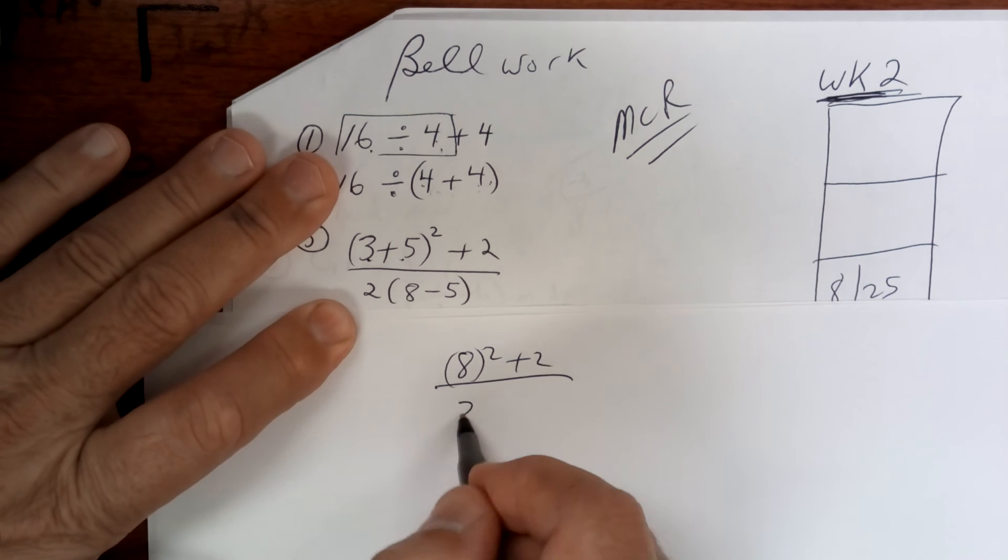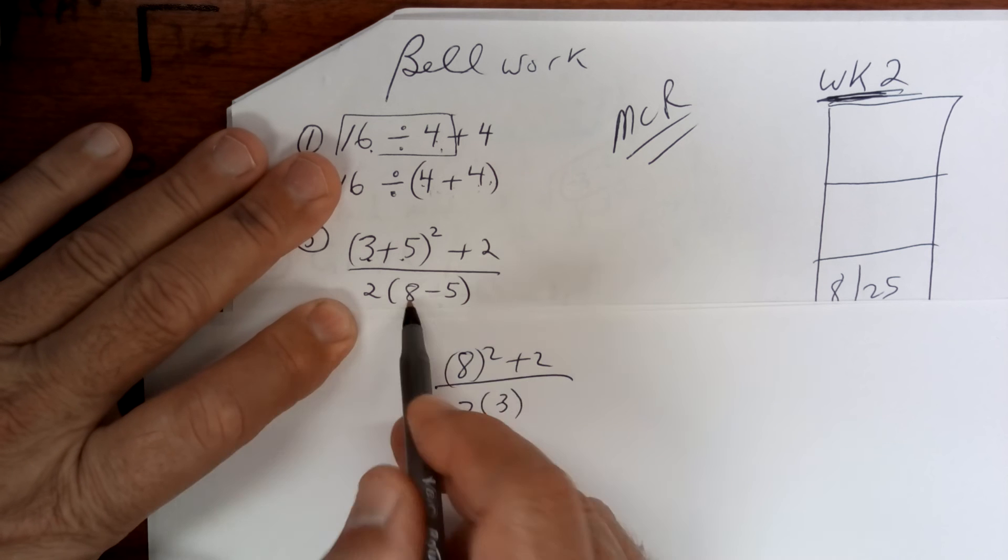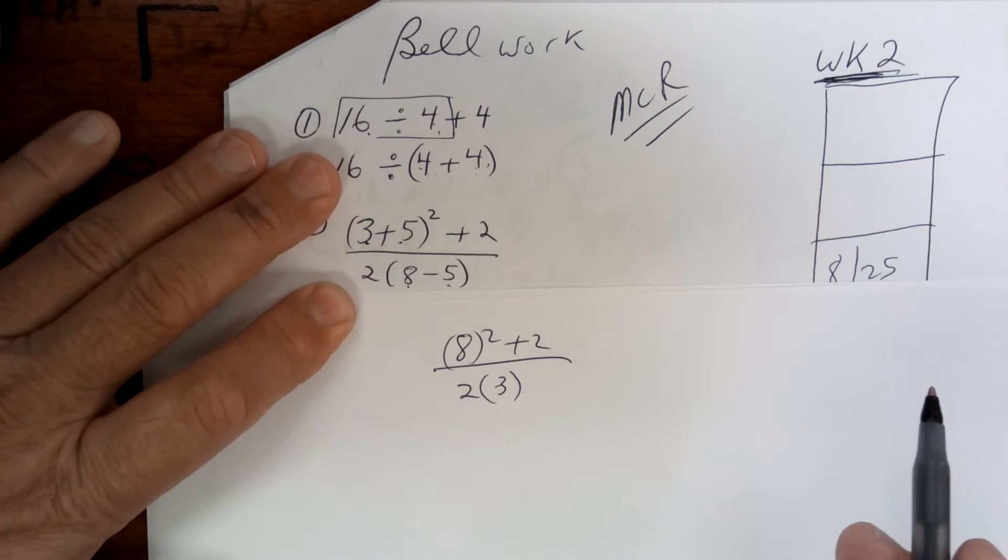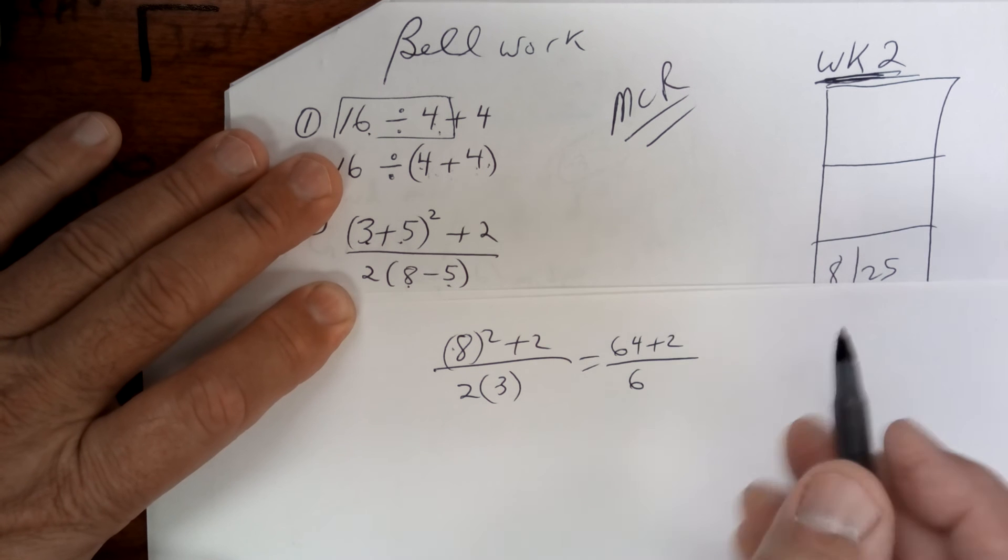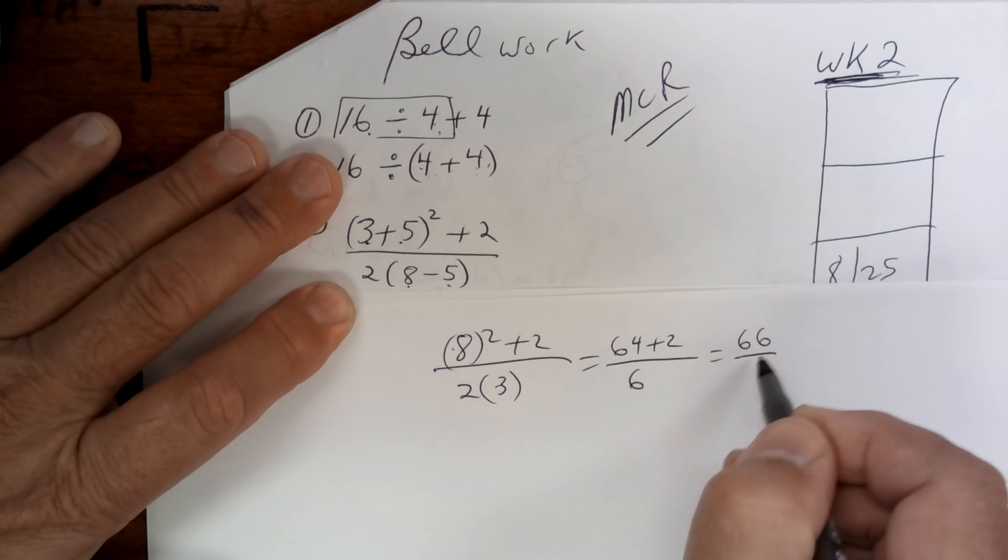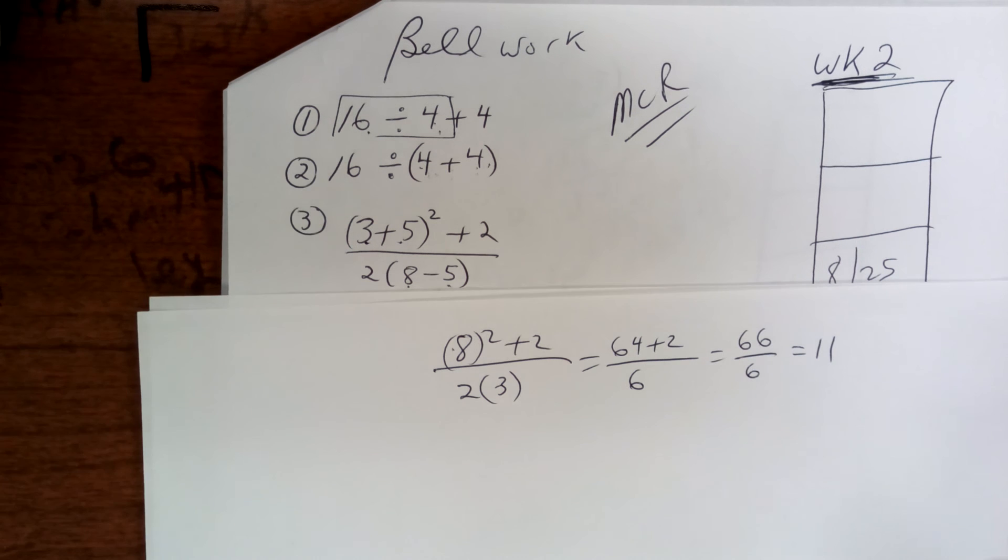So 8 times 8 is 64 plus 2 divided by 6. So I end up with 66 divided by 6, which is 11. Make sure you understand order of operations.